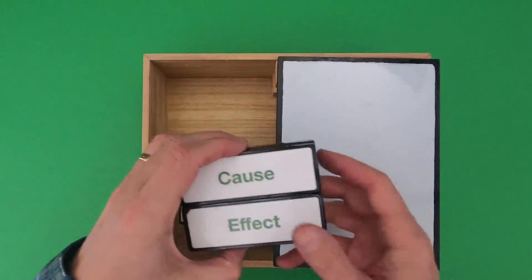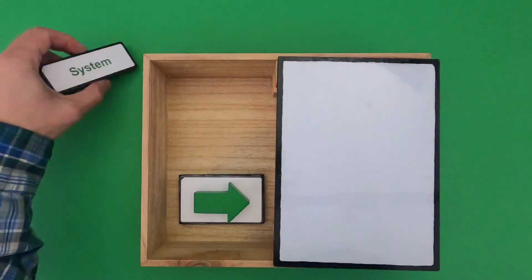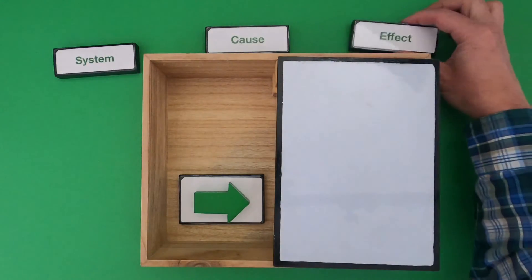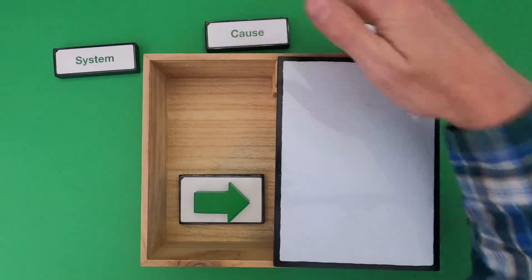Up to this point when we've been looking at cause and effect, it's always been important to first define the system and then work backwards, first identifying what is the effect and then working backwards to figure out the cause.